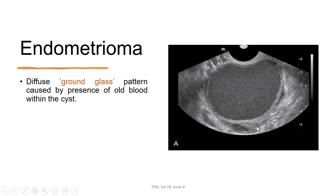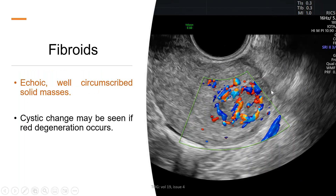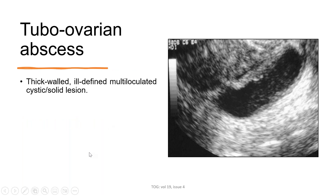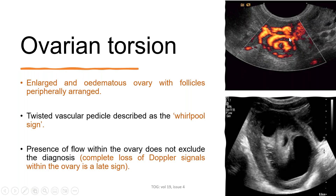Endometriomas give a ground-glass pattern due to the presence of old blood within the cyst. Fibroids are usually hypoechoic, well-circumscribed solid masses, and cystic changes may be seen if red degeneration occurs. Hydrosalpinx appears as thin-walled tubular structures containing anechoic fluid, with a 'beads-on-string' appearance due to remnants of the endosalpingeal folds. Tubo-ovarian abscess appears as a thick-walled, ill-defined, multi-loculated cystic and solid lesion. In torsion, the ovary is very enlarged and edematous with peripherally arranged follicles, and the twisted vascular pedicle is described as a 'whirlpool sign.' Presence of flow within the ovary does not exclude the diagnosis, as Doppler signals may be lost late.